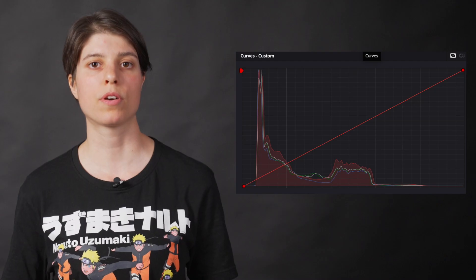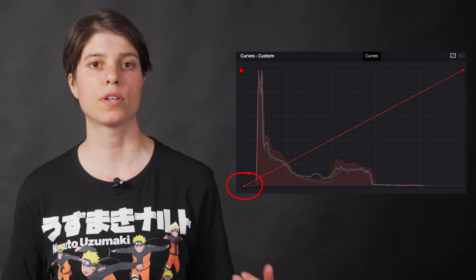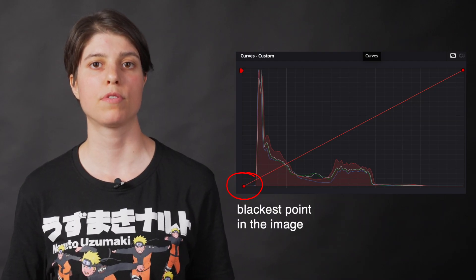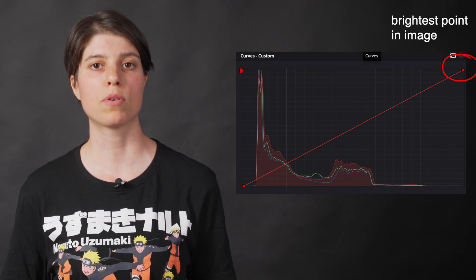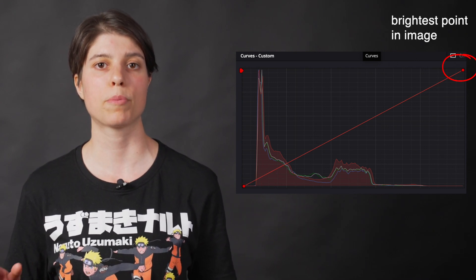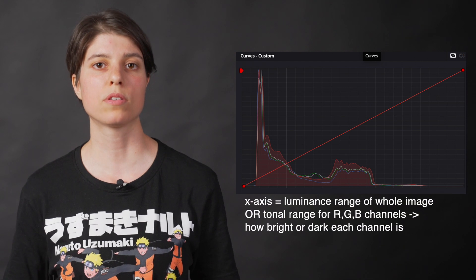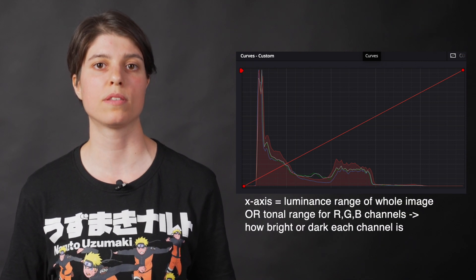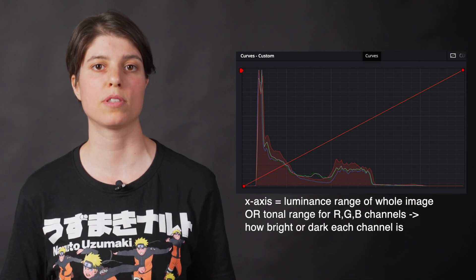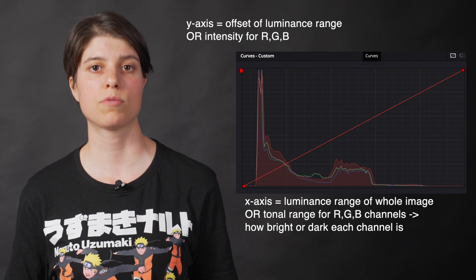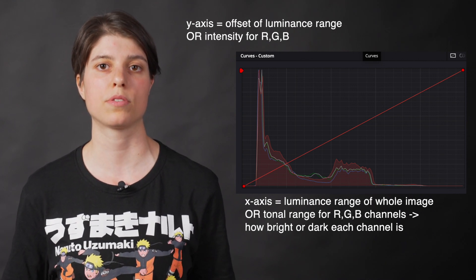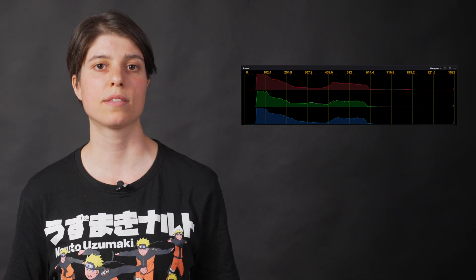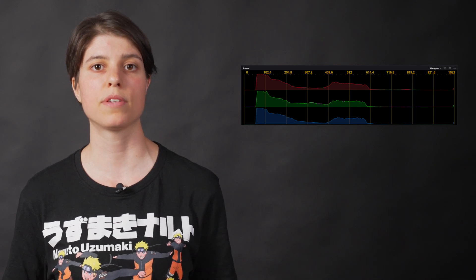I looked at the color shift by selecting the curves button in the color tab and the histogram option from the scopes. For the curves graph, the lower left represents the blackest potential point of the image, and the upper right represents the whitest. The horizontal axis represents the luminance range of the image itself, and the vertical axis represents the offset of that luminance range. This histogram provides a graphical representation of each channel's tonal distribution.